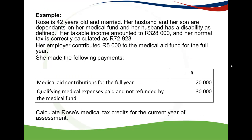So let's do an example quickly. Rose is 42 years old and married, so she is younger than 65. Her husband and her son are dependents on a medical aid fund, and her husband has a disability as defined. So in other words, she would get this rebate and not the first rebate that we did in Part 1.